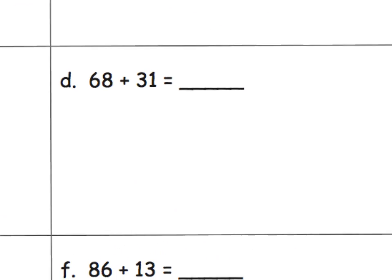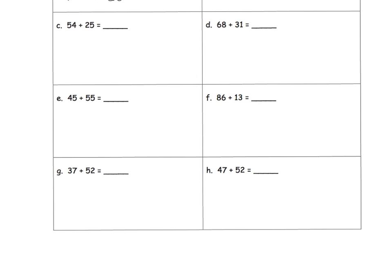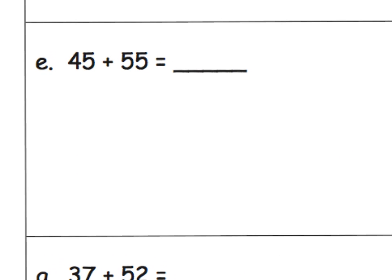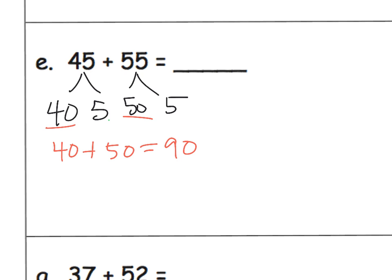Let's go to something that requires real deep thinking. Question E. We might just say 45 is 40 and 5, 55 is 50 and 5. And then I might take the 40 and the 50 and say 40 plus 50 gives me 90. Then I can think of the 5 and the 5 and say 5 plus 5 equals 10. And then I could say 90 plus 10 gives me 100. So there's our answer.